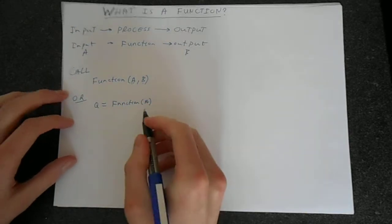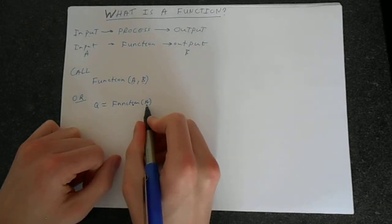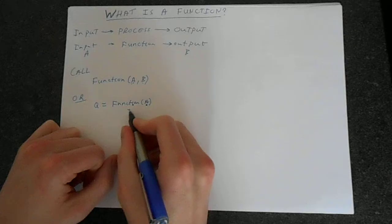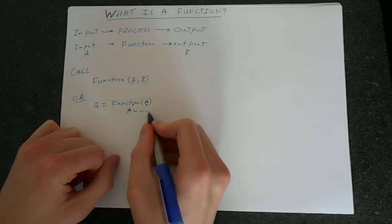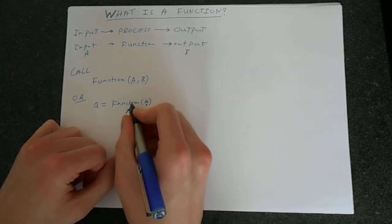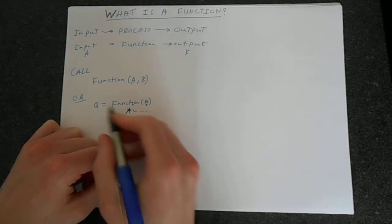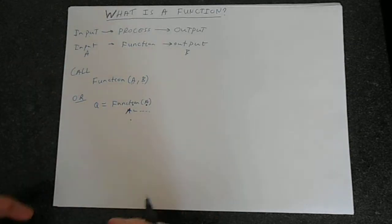We would talk about this as calling the function with the value a. Your a would be used somewhere in the function and it would produce some result. You make the function equal to the result and that would equal q, and you could continue using q in your program.